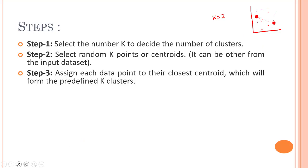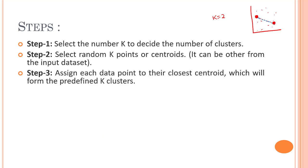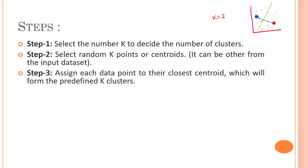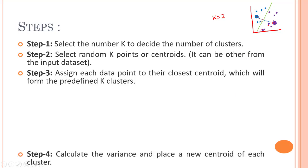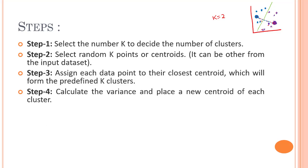We assign each data point to the closest centroid and change its color accordingly. Using a bit of geometry, we draw a straight line to separate the regions. All the points on one side represent the blue cluster, and all the points on the other side represent the purple cluster. After doing this, we calculate the variance and place a new centroid for each cluster, since the main aim of k-means clustering is to decrease the variance.